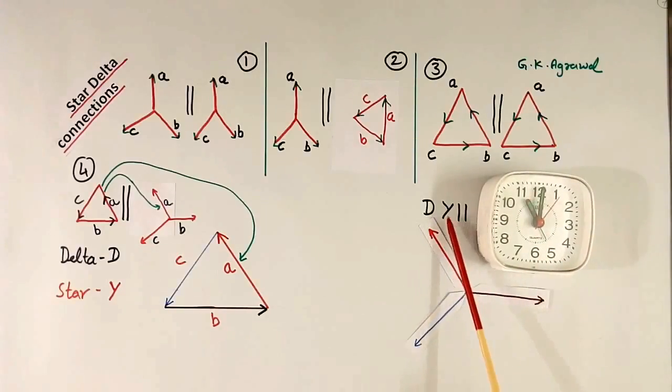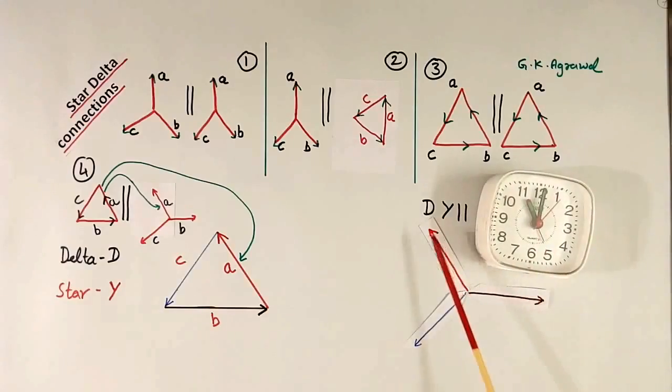This is secondary. So it is called Y 11. Secondary is Y 11 because phase A is towards 11. And we call this arrangement DY 11.